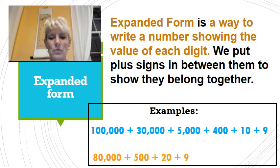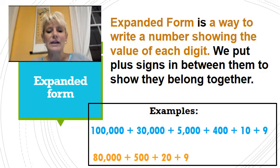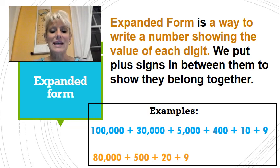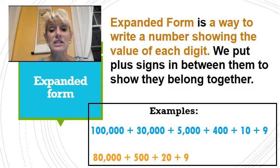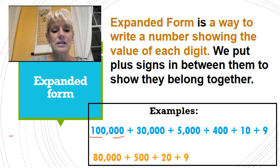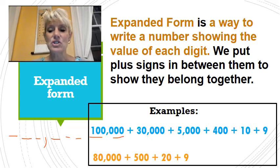Expanded form — remember, that's when we take our number and break it apart and tell what each value is. An important thing to remember is that you have to count how many places we're actually working with. So in this first one I see there are three places, a comma, and three places. So if I were to write this number in standard form, I would need to make sure there were three places, a comma, and three places, and then fill those in with what needs to be there.